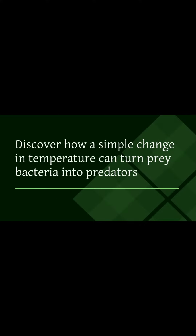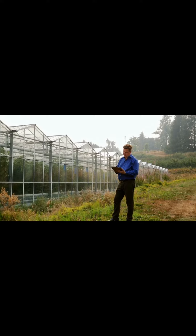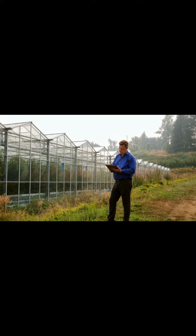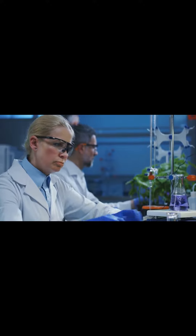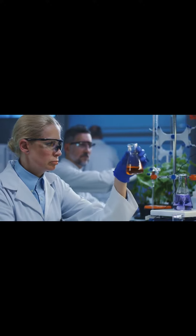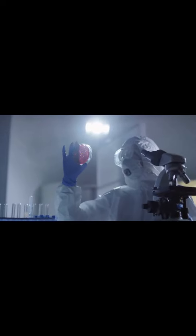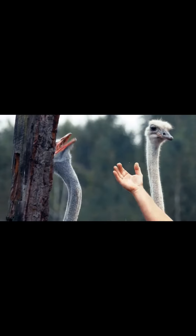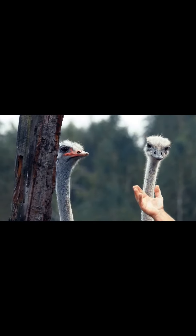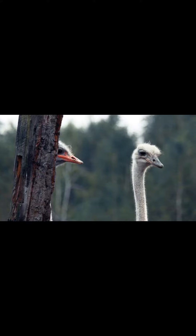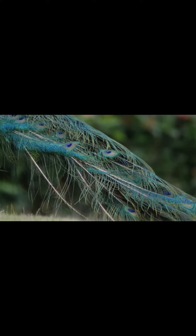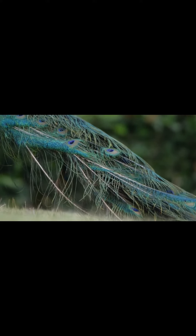Discover how a simple change in temperature can turn prey bacteria into predators. In a recent study published in PLOS Biology, researchers found that when one species of bacteria was grown at a lower temperature, the predator-prey relationship between two bacterial species reversed. At a lower temperature, the prey bacteria became the predator, killing and obtaining nutrients from the other species for its continued growth.